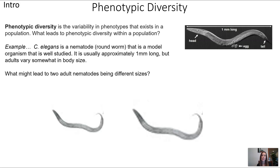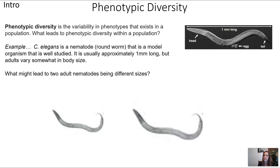C. elegans is a nematode — a roundworm — pictured here, and it's a model organism, so it's well understood and well studied by scientists. It's usually about a millimeter long, really small, but adults do vary somewhat in body size. Let's try to think through what might be some factors that lead to two adult nematodes being different sizes.